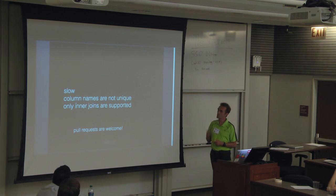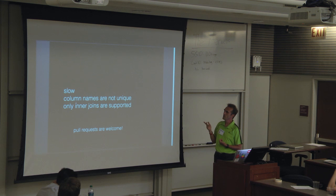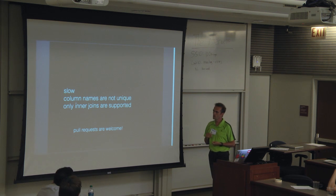So the problems with it: it's slow. Column names aren't unique. That's a fun example of this thing. And right now, only inner joins are supported.